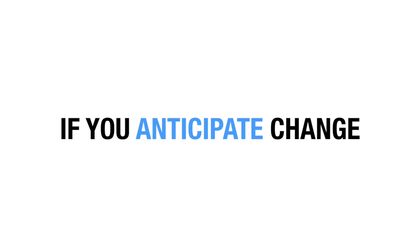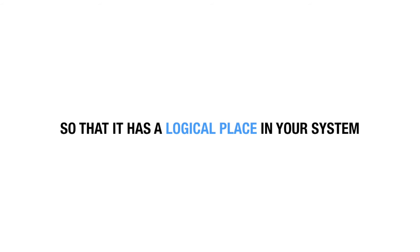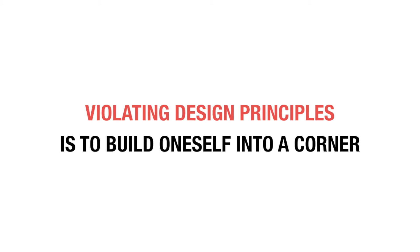If you see that potentially you could deliver more value by taking a different path, you anticipate that change. That doesn't mean you solve that specific problem now — of course not. But you abstract just enough so that there's a seam in your system where, if you want to change that particular thing, you have a logical place to throw out the old piece and build a new one. When you break design principles, you're spending time building yourself into a corner. The open-closed principle says: find the right seams in your application so you don't have to throw out massive pieces — just inject the members that do the work.